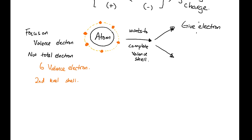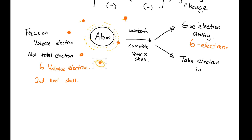Either you give electrons away or you take electrons in. If I wanted to give electrons away, I would have to give away six electrons. The outermost shell would no longer exist because there would be no electrons at that level. The inner shell would then become the valence shell, which has two electrons — so it is filled and stable.